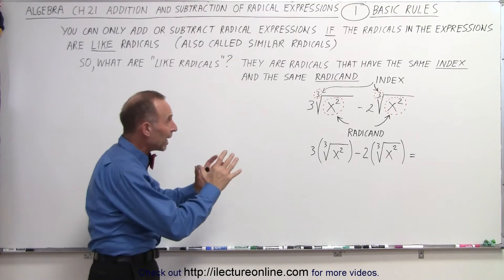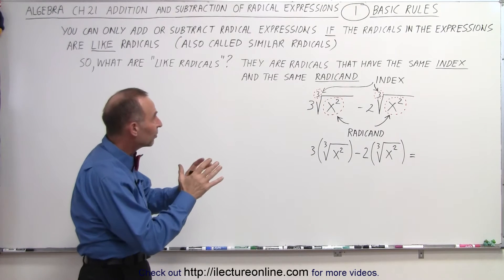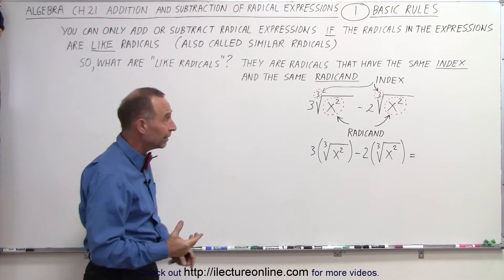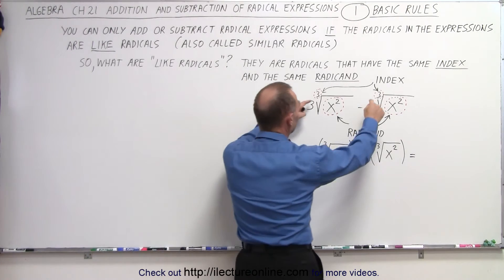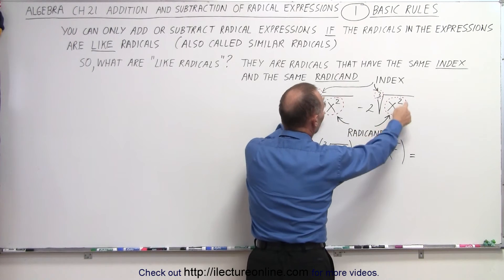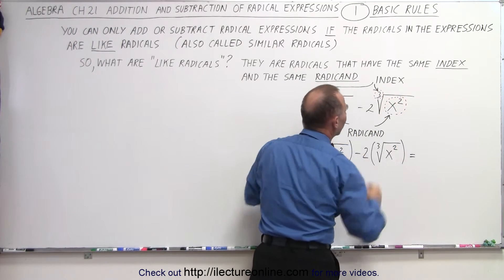So if they're going to be like radicals, they must have the same index and the same radicand. Now what is the index and what is the radicand? Well, the index is basically the root of the radical. The radicand is what's inside the radical sign.